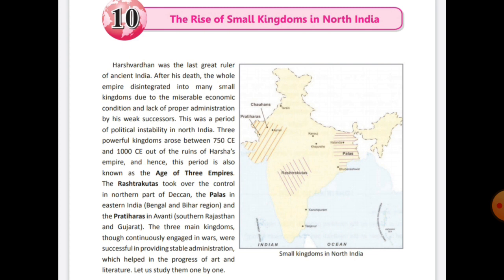Though these three kingdoms were continuously engaged in war among themselves, they were also successful in providing stable administration to the people — they were able to provide security and fulfill basic needs. They also helped in the progress of art and literature. Let's study about each of them one by one.